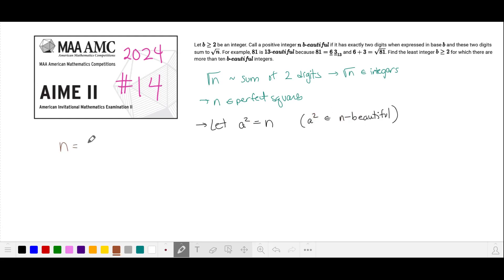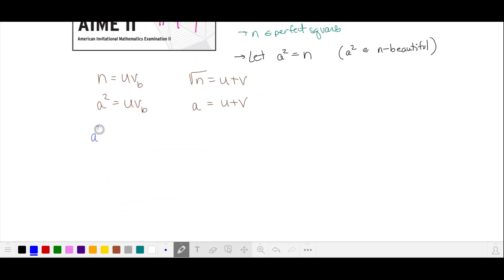In base b, n has two digits, we'll call them u and v, and the square root of n is the sum of these two digits. So let's substitute. We'll write a squared as u times its base plus v in the unit's digit, and we'll find the difference of these two equations and solve for u.